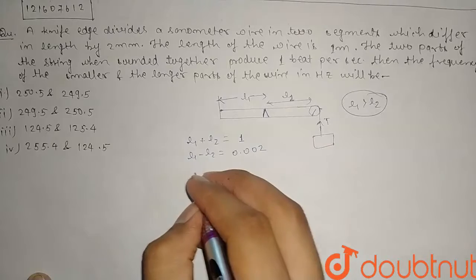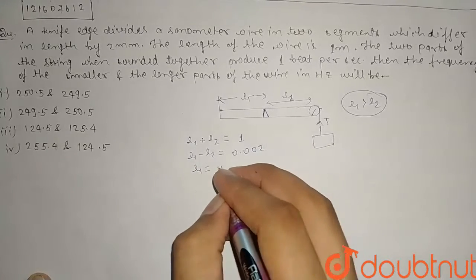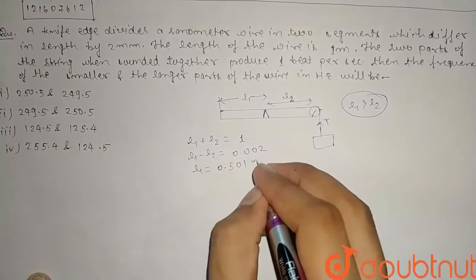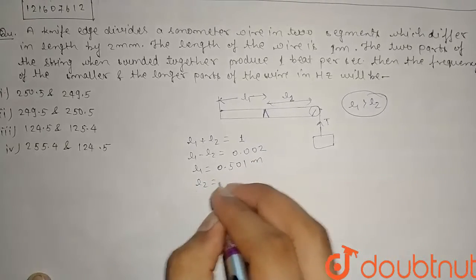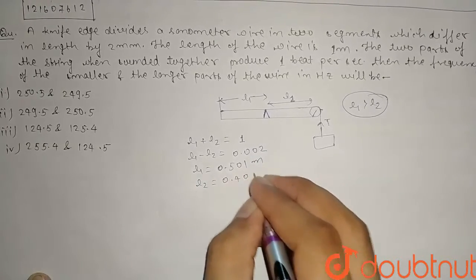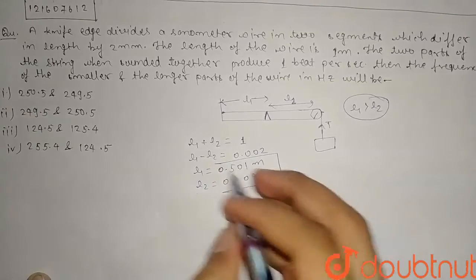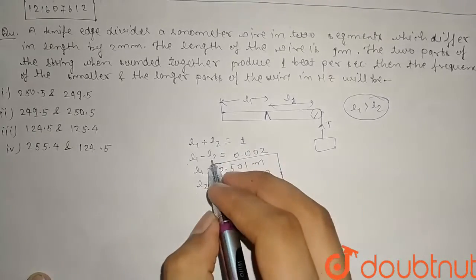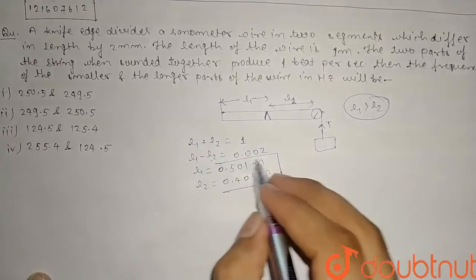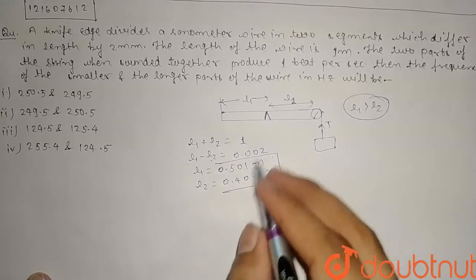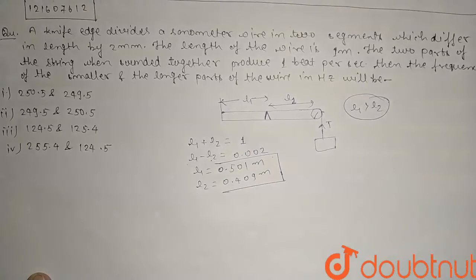Jod denge in ko. To yahan se humein L1 ki value mil jayegi. L1 ki value mil jayegi 0.501 meter. And L2 ki value mil jayegi yahan se guys 0.499 meter. Kaise hai ki, in dono ko agar hum do jodenge, to yeh dekhi L2 L2 cancel out hogi, 2 L1 is equal to 1.002, yaani L1 is equal to 0.501. Value put kar dein ki kissi ek mein, 0.499. L2 ki value mil jayegi.